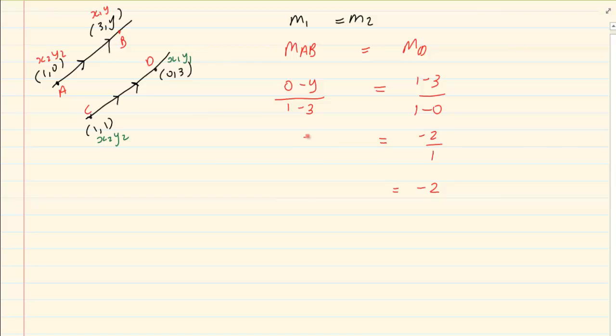If we solve this side, we have 1 minus 3 is minus 2 over 1 which is equal to minus 2. Here we have minus y. 0 minus y is minus y over 1 minus 3 is minus 2. So we got y over 2 is equal to minus 2. To get rid of the y, we are going to multiply by 2. So I have y is equal to minus 4.